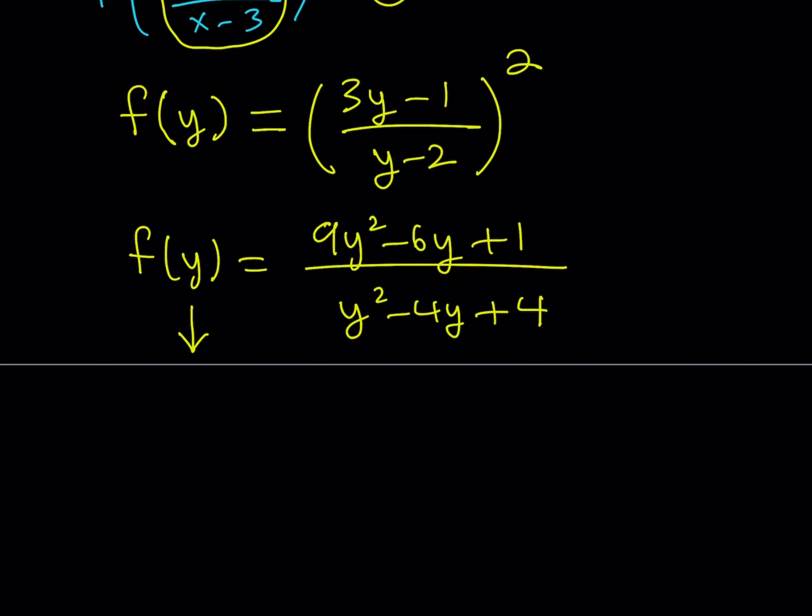So let's go ahead and replace y with x. And that's going to give us f of x equals 9x squared minus 6x plus 1 divided by x squared minus 4x plus 4. Of course, we have to consider the domain here.